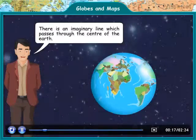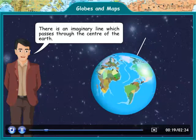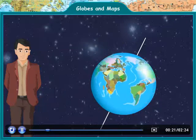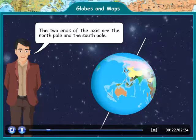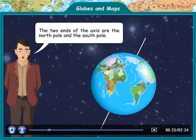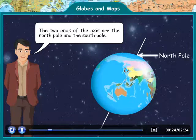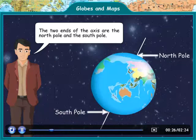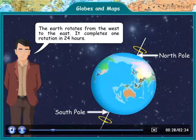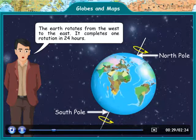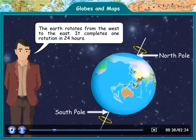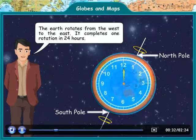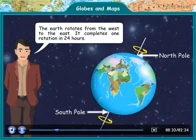There is an imaginary line which passes through the center of the Earth. The two ends of the axis are the North Pole and the South Pole. The Earth rotates from the West to the East. It completes one rotation in 24 hours.